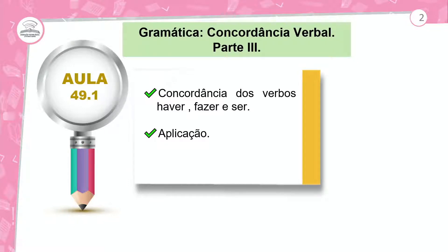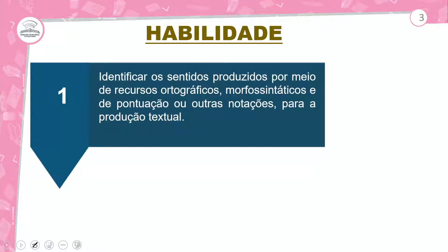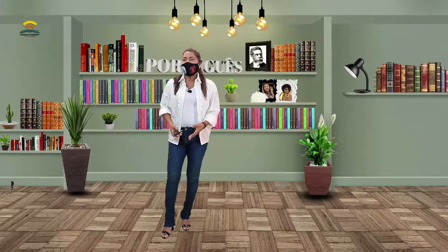Vamos estudar a concordância dos verbos haver, fazer e ser, e tudo isso na sua aplicação. Vamos à habilidade desta aula. Habilidade 1: identificar os sentidos produzidos por meio de recursos ortográficos, morfossintáticos e de pontuação ou outras notações para a produção textual. O objetivo é que, ao final da aula, você tenha consolidado a identificação desses recursos para te ajudar na produção textual.